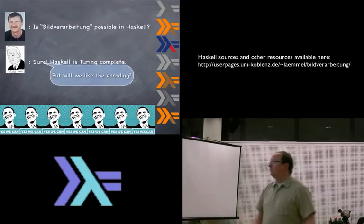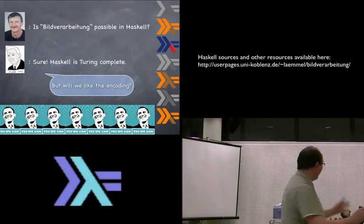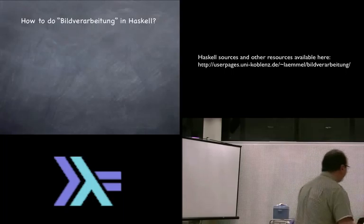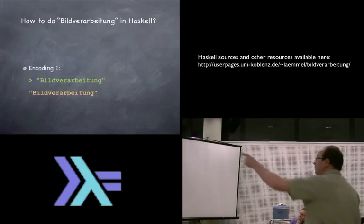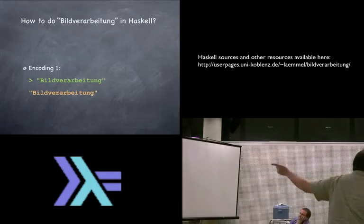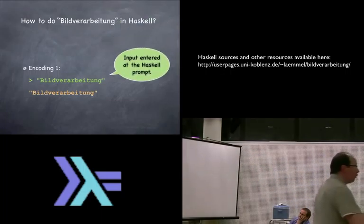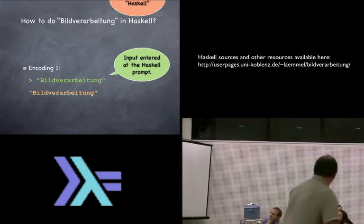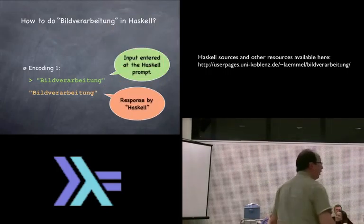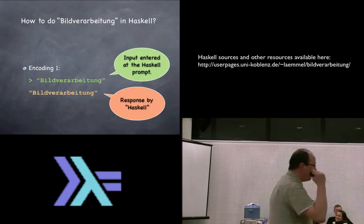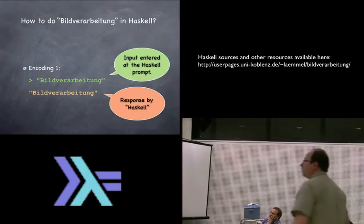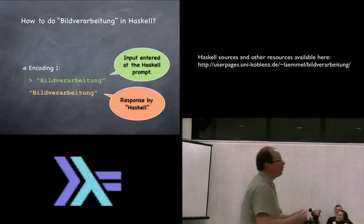But will we like to encode it? We will have to see. So, how to do Build for Arbeid Oak in Haskell? This is the first encoding. We are here at the Haskell prompt, we just enter our implementation of Build for Arbeid Oak in bold quotes. This is definitely totally type-safe, obviously, because we get a result. Build for Arbeid Oak. It works. This is our first encoding.